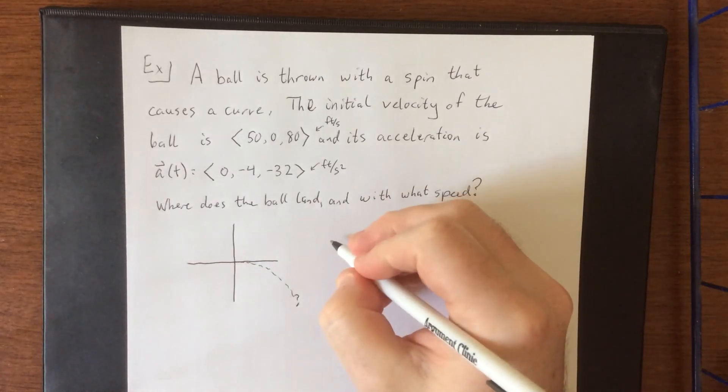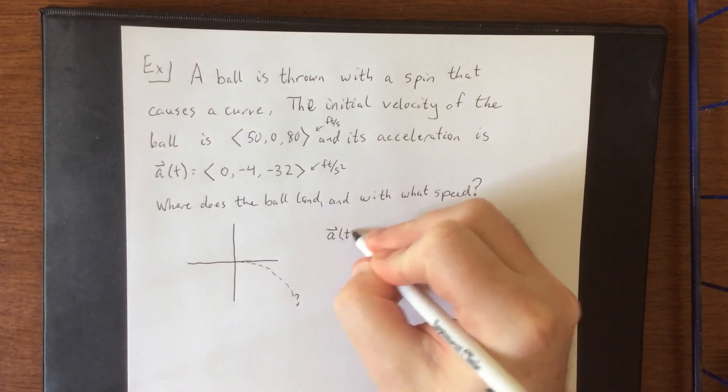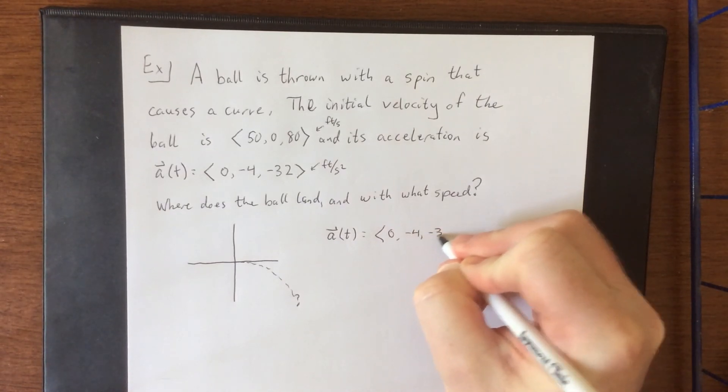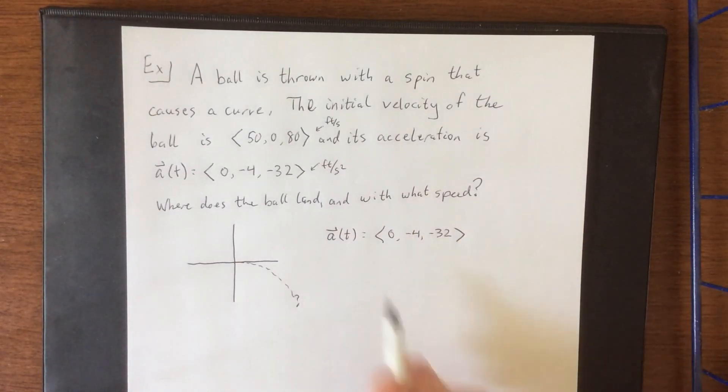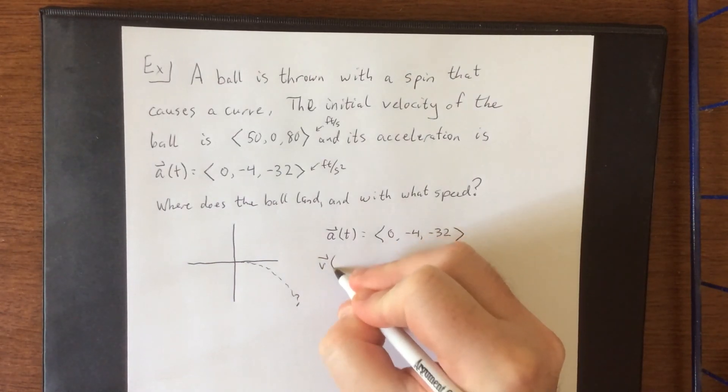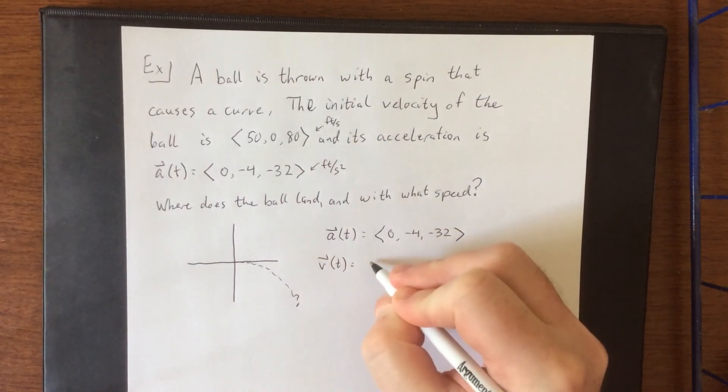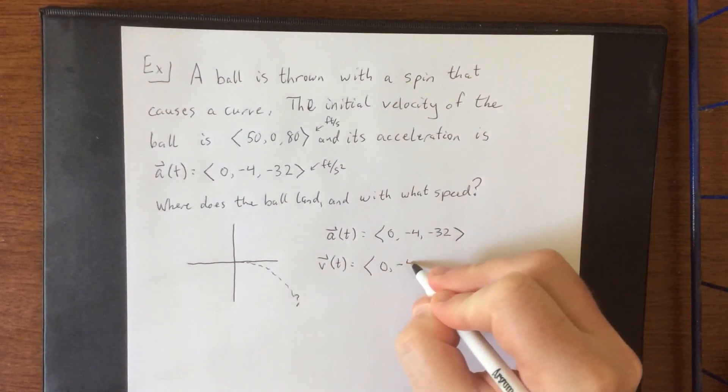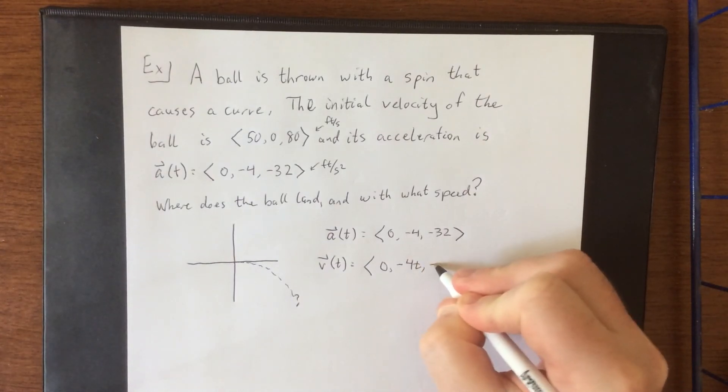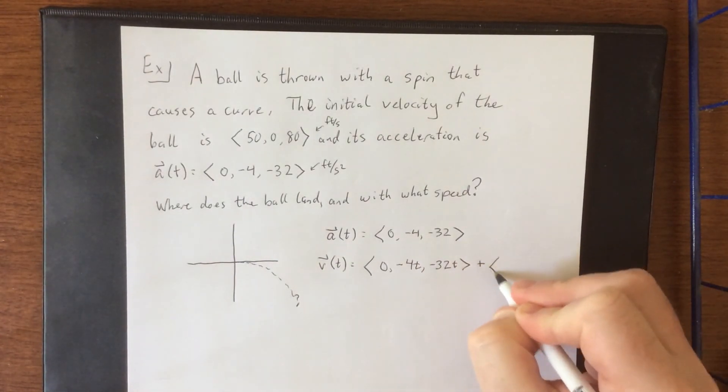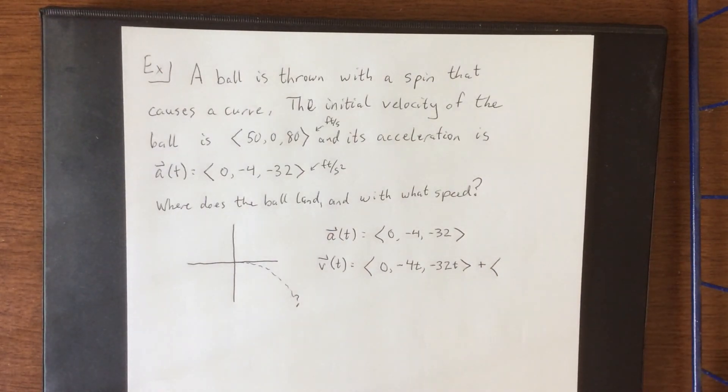Now we've been given the acceleration function, a(t) = <0, -4, -32>. What we'll do is integrate this to come up with a velocity function. So the velocity function in this case is going to be the integral of 0 is 0, integral of -4 will be -4t, and the integral of -32 will be -32t, plus whatever the initial velocity happens to be.